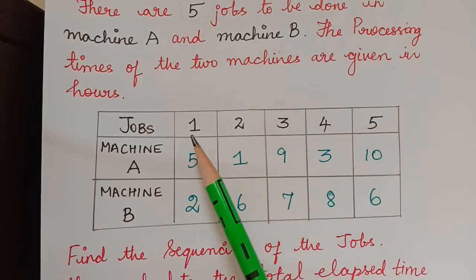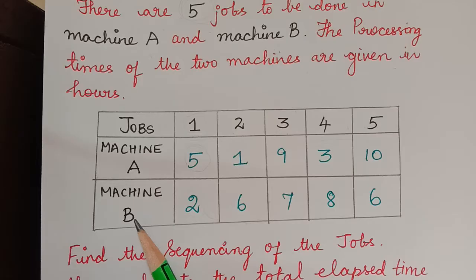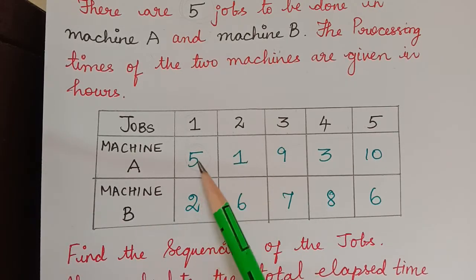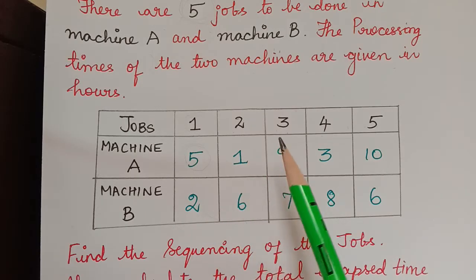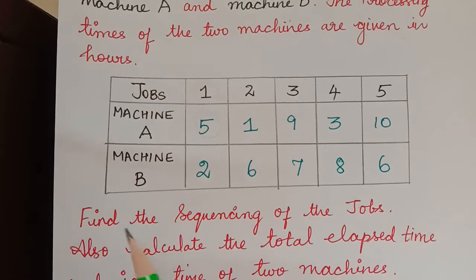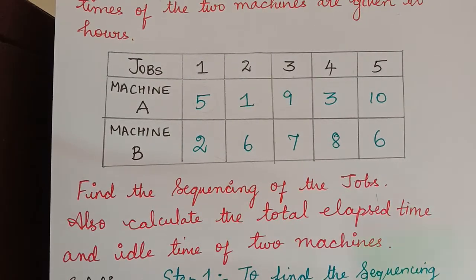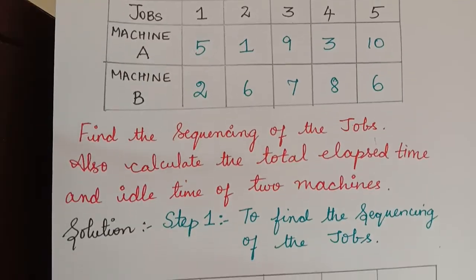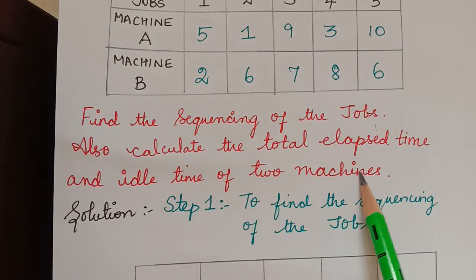These are the jobs. Job 1 takes 5 hours in machine A and 2 hours in machine B. The time taken to be performed in machine A and machine B is known as the processing times. The question is: find the sequencing of the jobs, calculate the total elapsed time, and the idle time of the two machines.